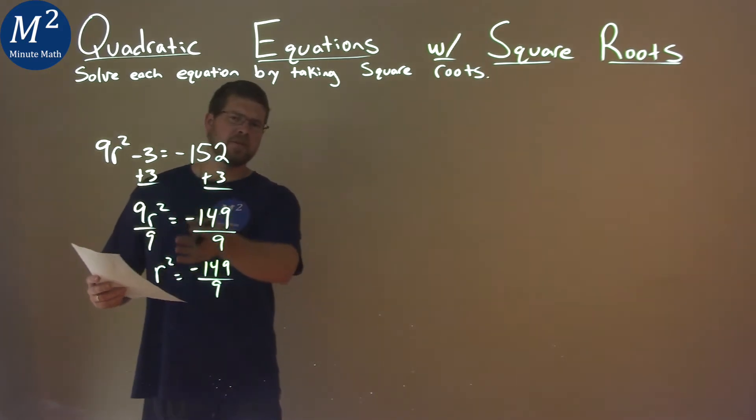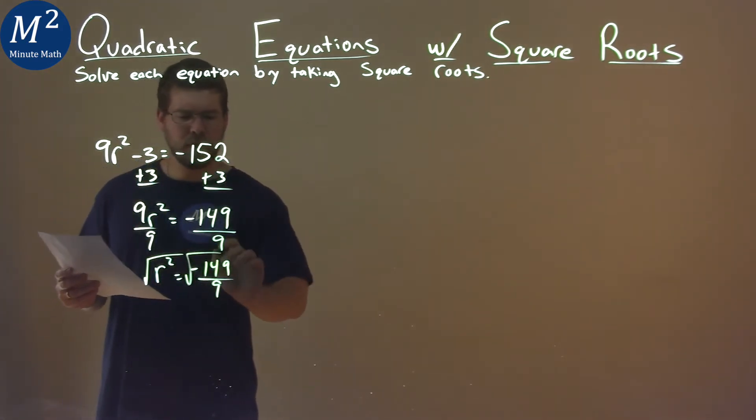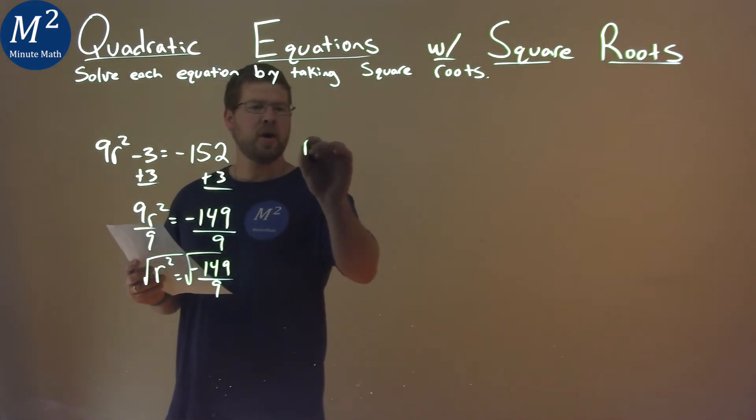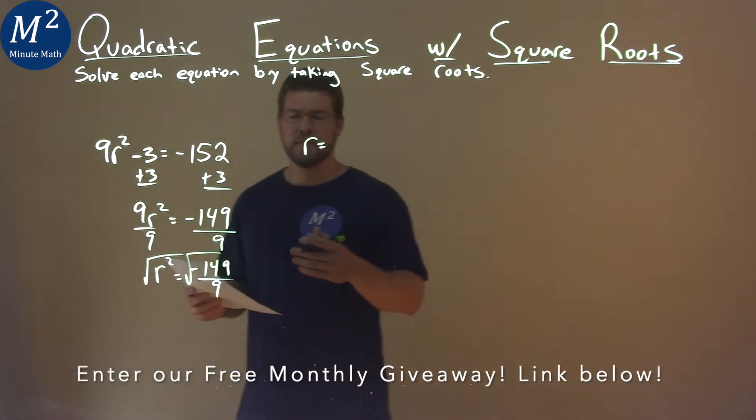To get rid of the square, I take a square root of both sides. I square root of both sides, and I'll put it up here, and r equals...